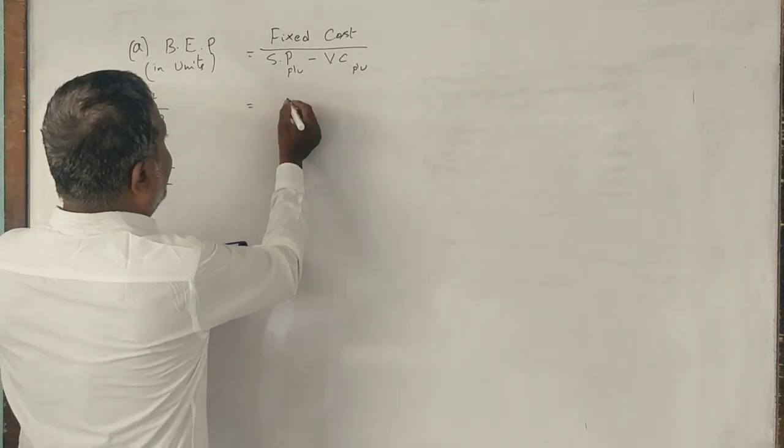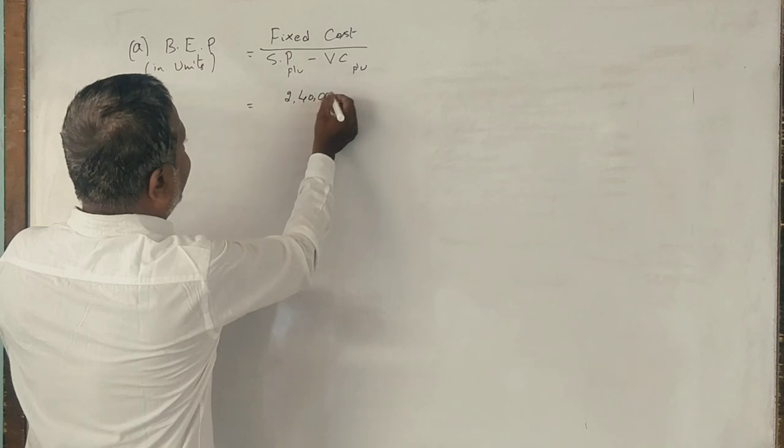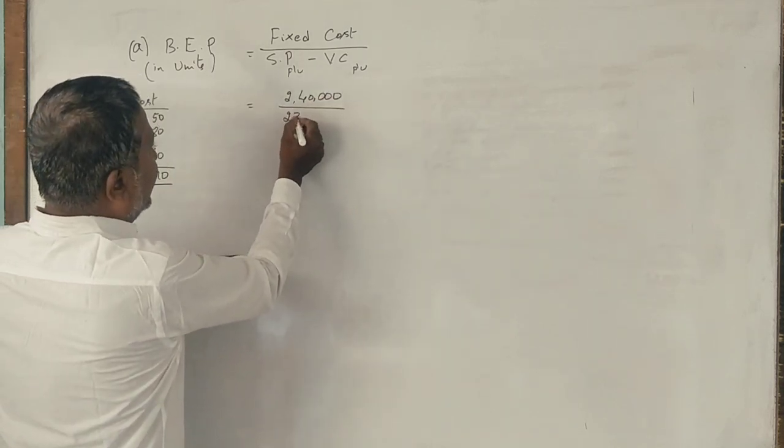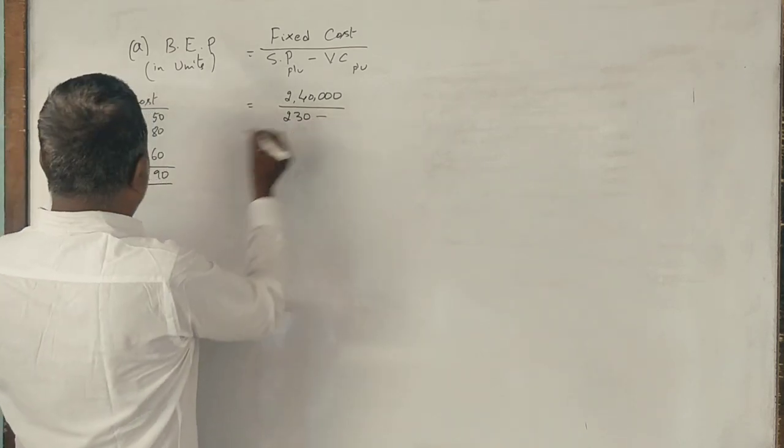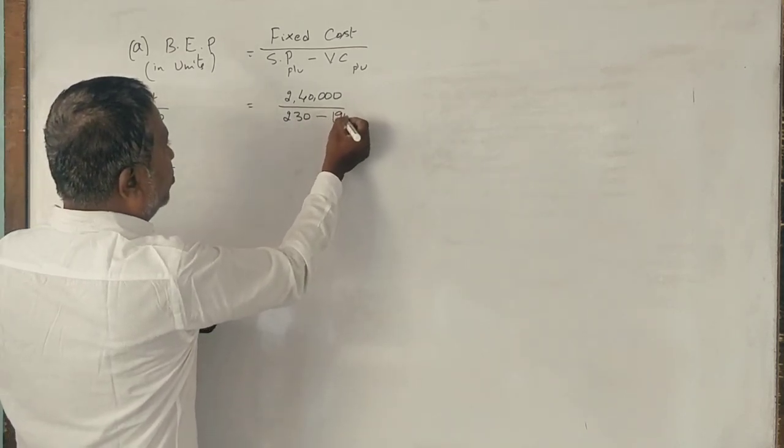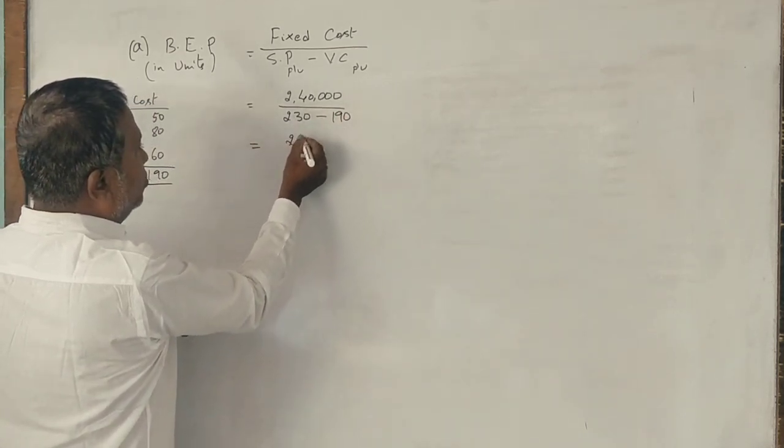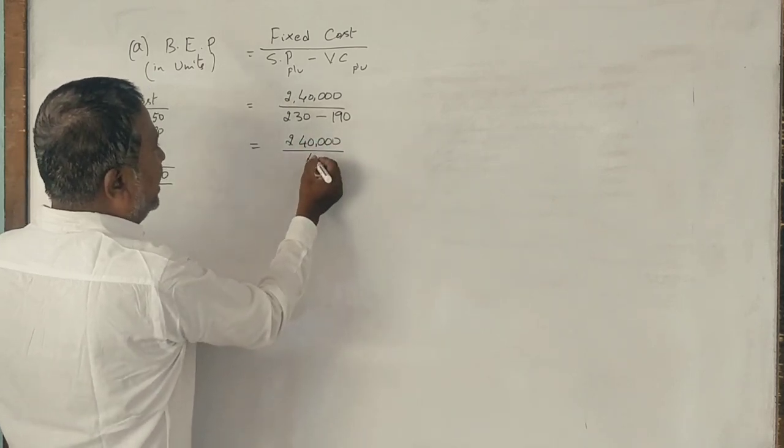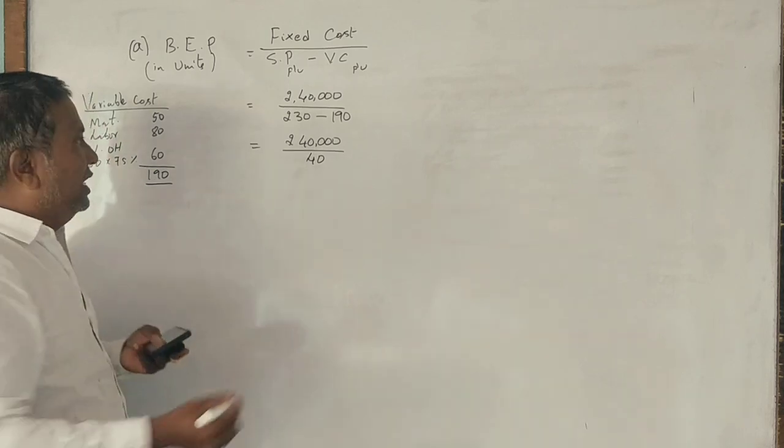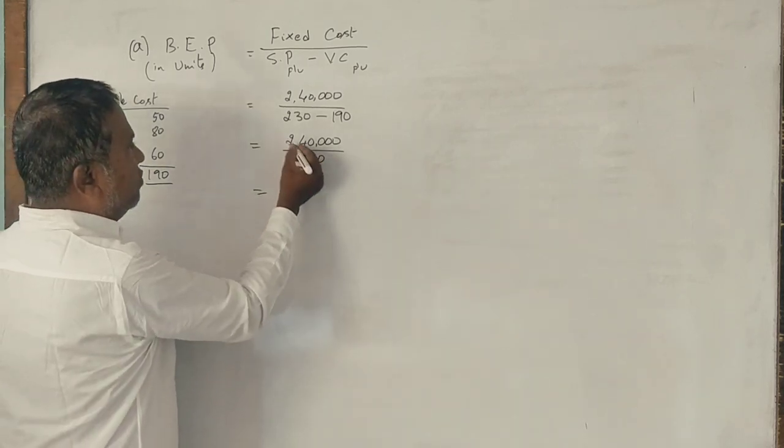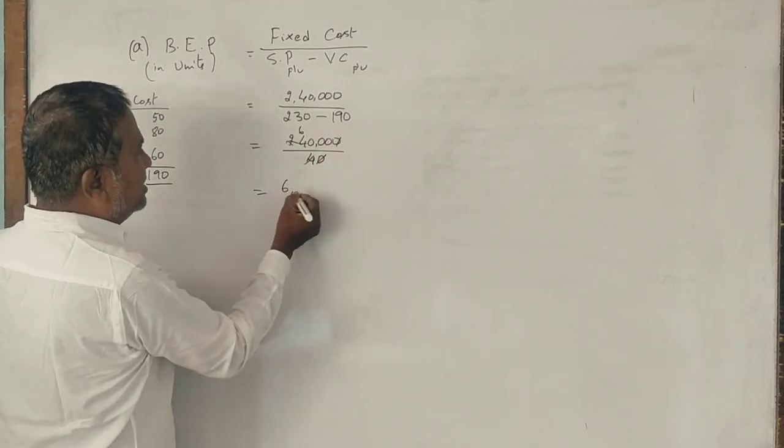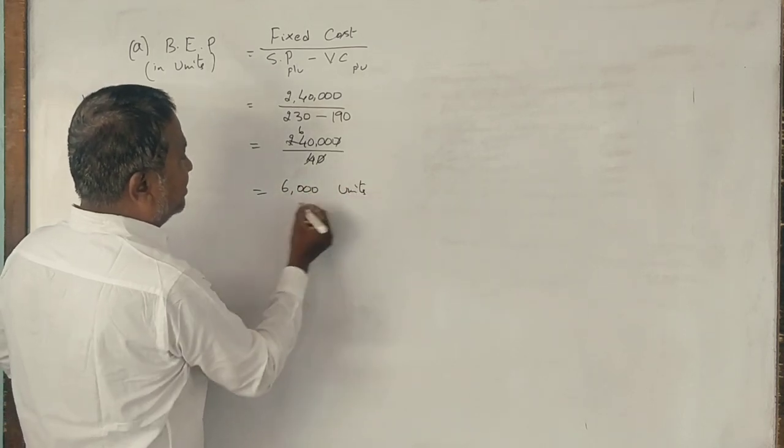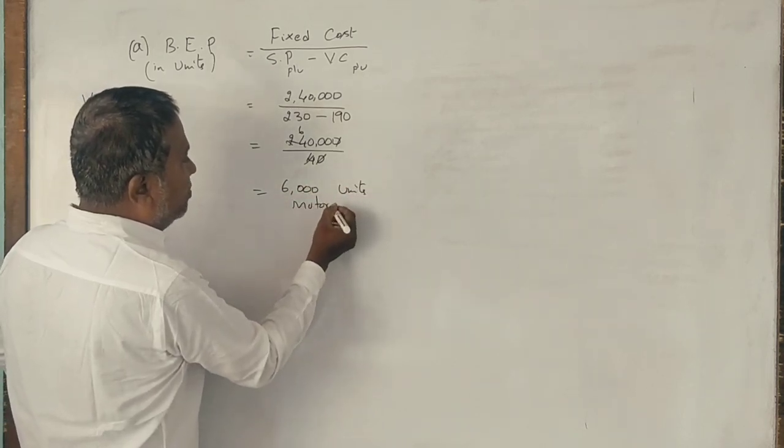Fixed cost is 2,40,000 rupees. Selling price per unit is 230 rupees. Variable cost is 190 rupees. So 2,40,000 divided by 40 rupees equals 6,000 units of motors. In other words, no profit, no loss.